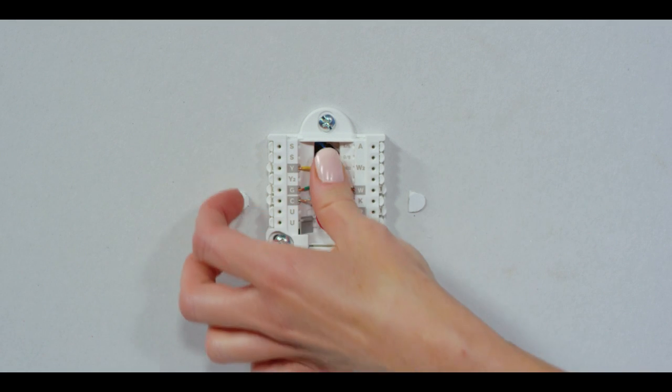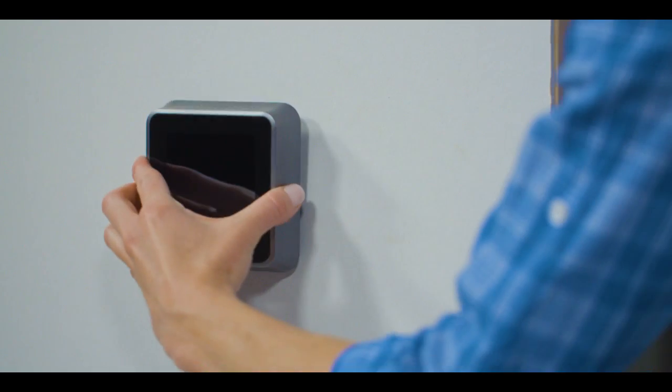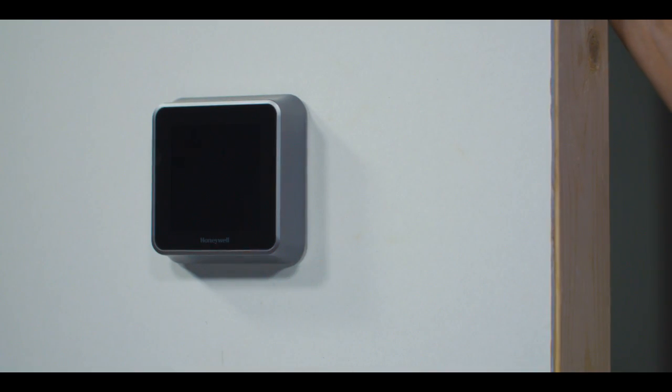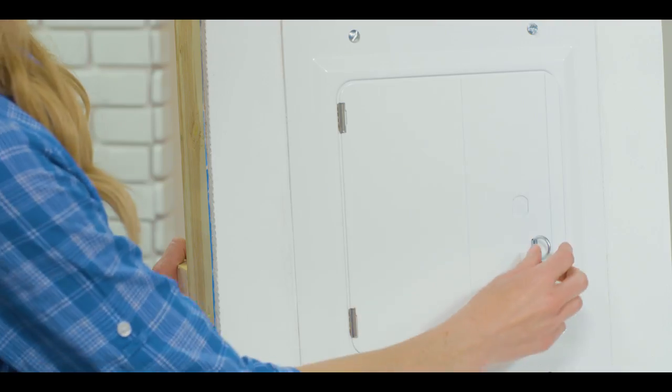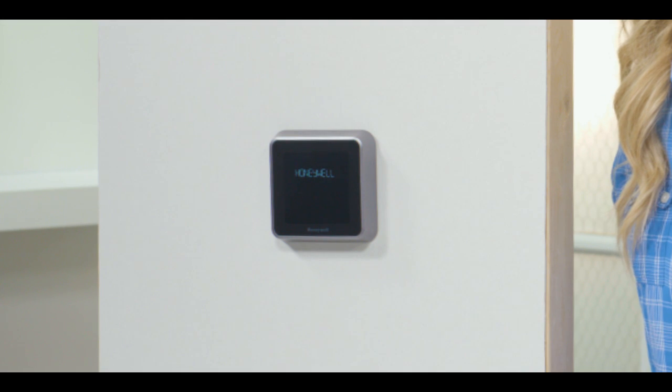Go ahead and push all the wires back into the wall and close the backplate. Pop the thermostat faceplate back on. Turn your power to the thermostat back on at the circuit breaker. Now that your thermostat has power, follow the prompts to set it up.